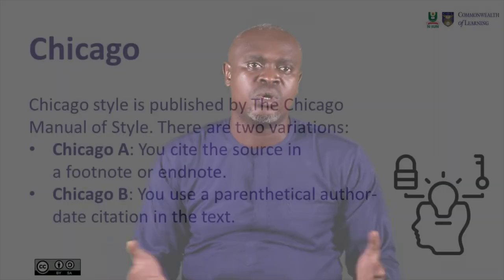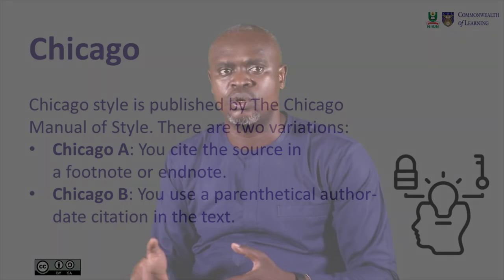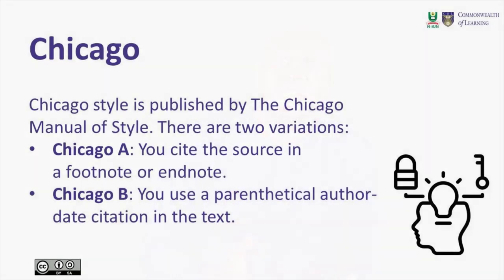The other citation style is Chicago. Chicago Style is published by the Chicago Manual of Style. There are two variations of the Chicago Style: Chicago A, where you cite the source in a footnote or endnote, and Chicago B, where you use a parenthetical author-date citation in the text. This style is also used in the sciences and other disciplines.